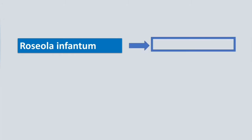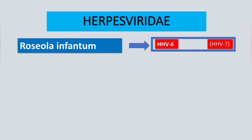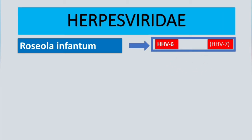In this video we are going to talk about the disease called roseola infantum. This disease is mainly caused by Human Herpesvirus 6, and in rare cases it can also be caused by Human Herpesvirus 7. These two viruses belong to the family Herpesviridae.